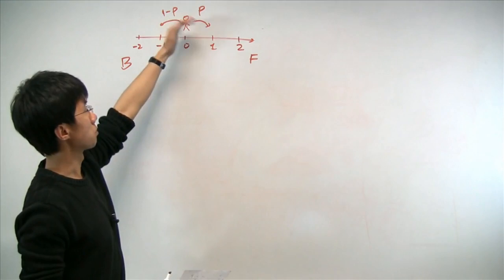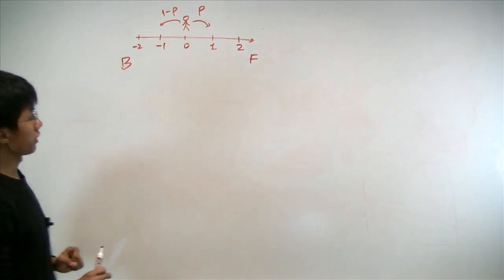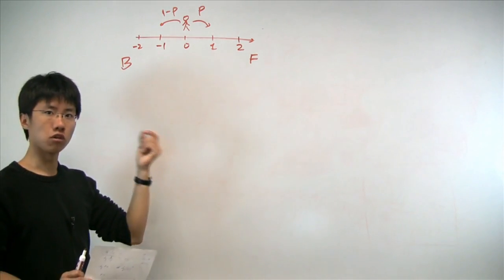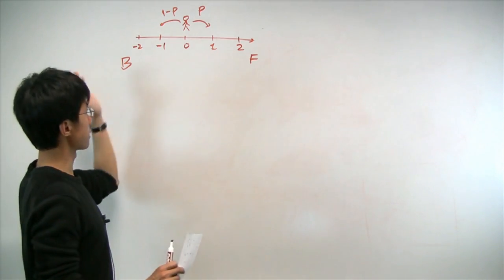In our case, with probability p, the person would go forward, and 1 minus p going backwards. Now the walk is random in the following sense, that the choice of going forward or backward in each step is random and completely independent from all past history.